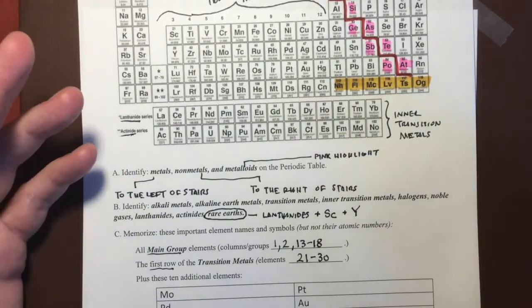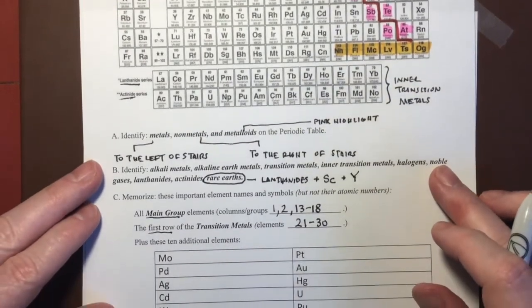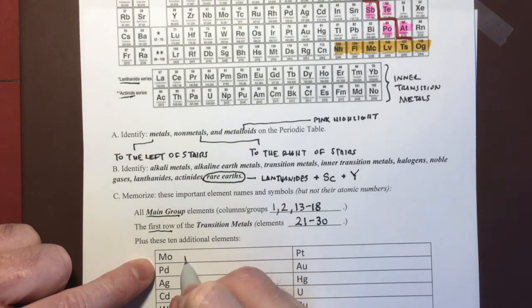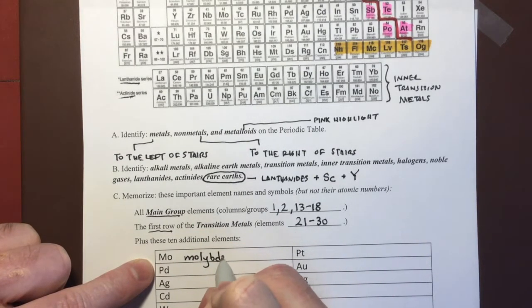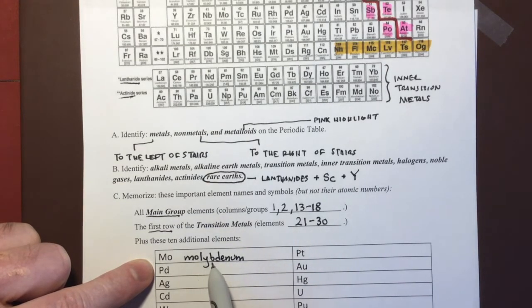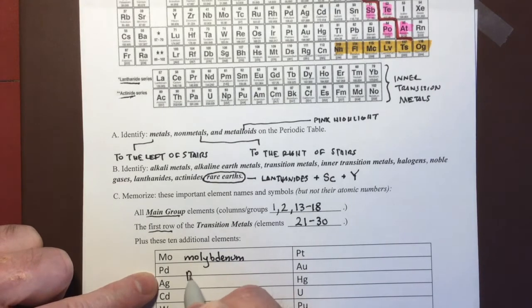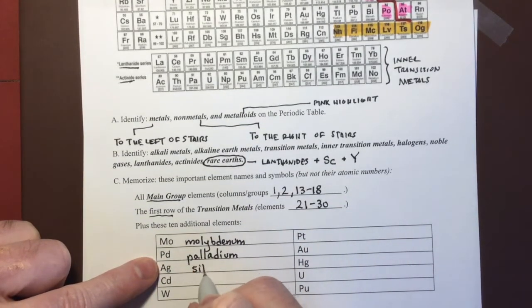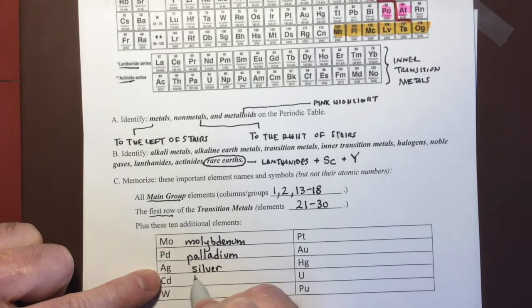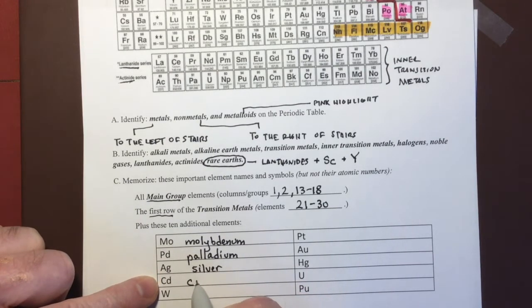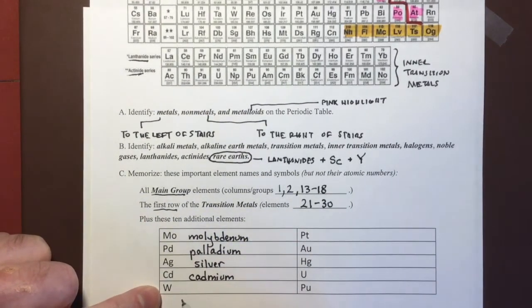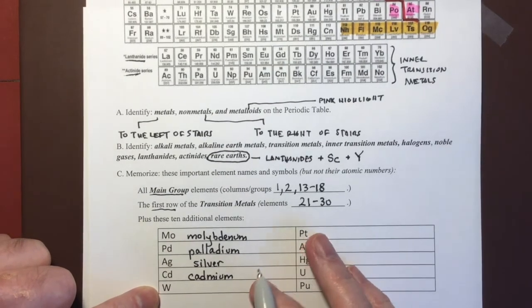In addition to those, I'm asking you to be familiar with ten more that are industrially and commercially important. So I'll go ahead and write these down. M-O is molybdenum. P-D is palladium. A-G is silver, not gold. It does have a G in it, but it's silver, not gold. C-D is cadmium.